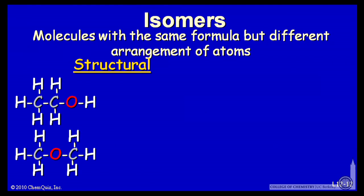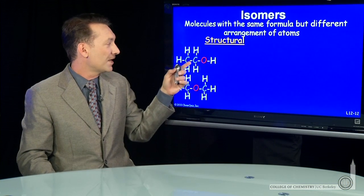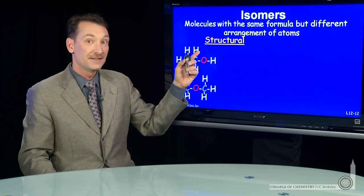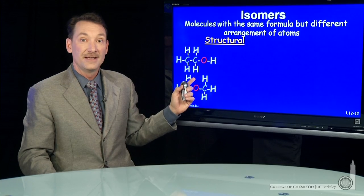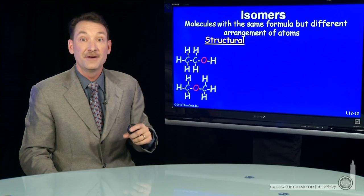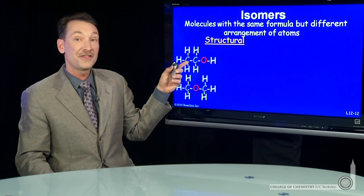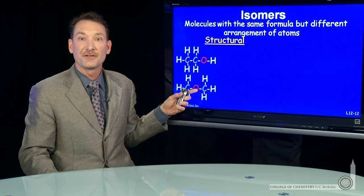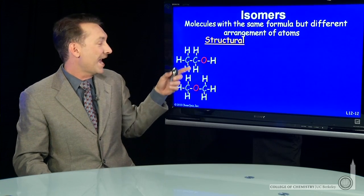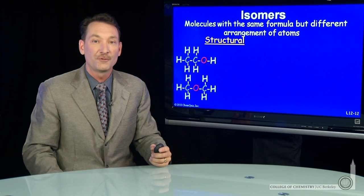Here's an example where I have the same chemical formula, C2H6O, but I can arrange the atoms like this or like this. These two molecules have dramatically different properties. This is ethanol, and this is dimethyl ether, but they have the same chemical formula.